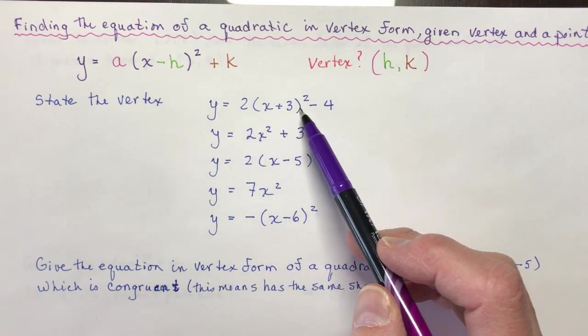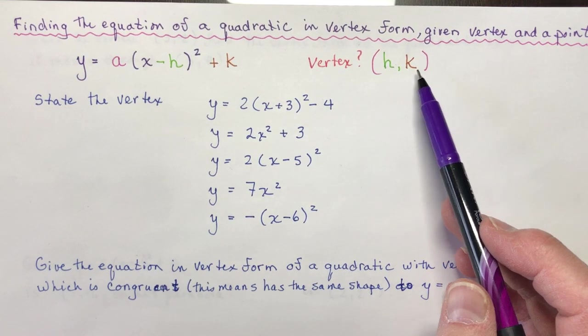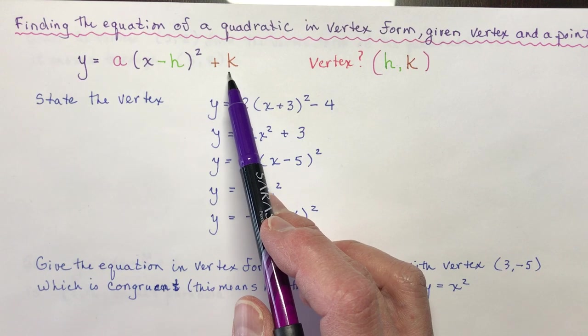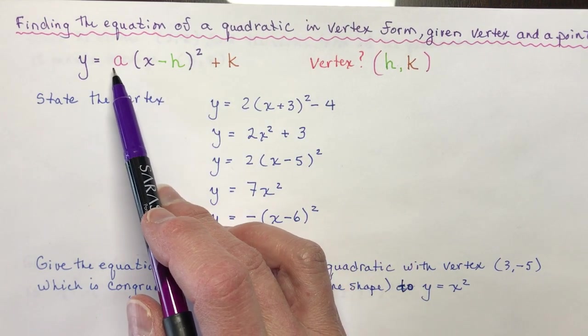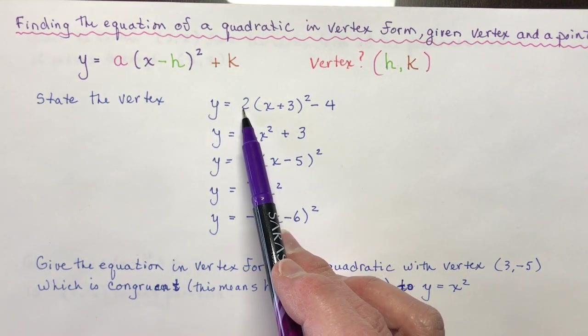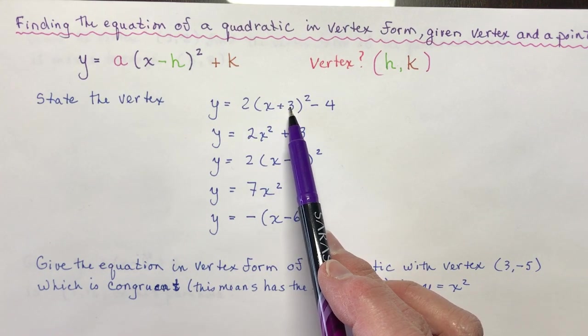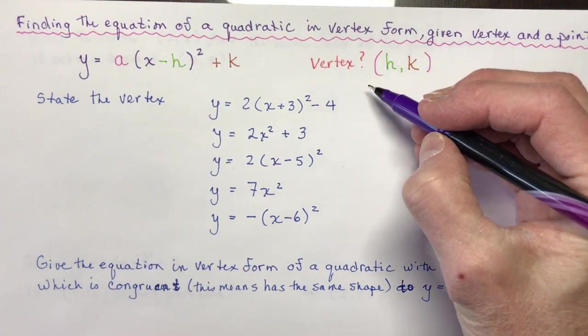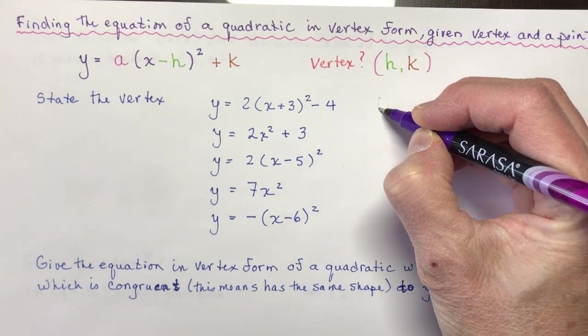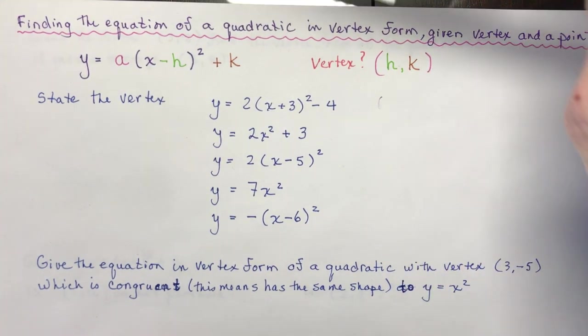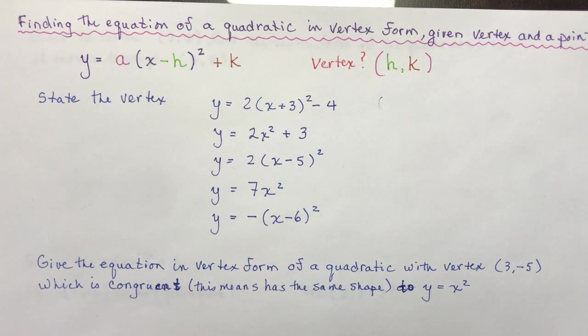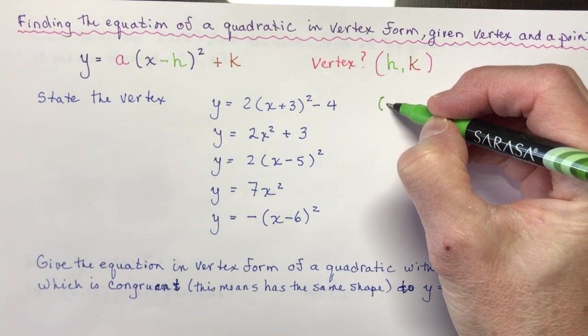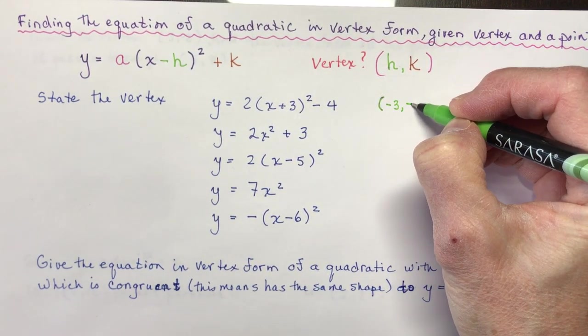So in this first equation here, I'm sure that you can figure out what h and k are from this equation because it's identical to this format written out here. It has all a, h, and k in it. a is 2, h is negative 3, and k is minus 4. So the vertex for this one is very easy to see, and it would be... oh, I guess my pen dried out because I forgot to put the top back on.